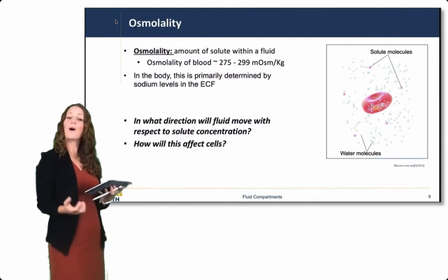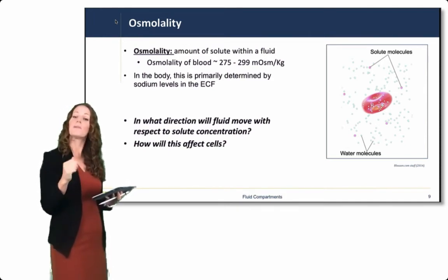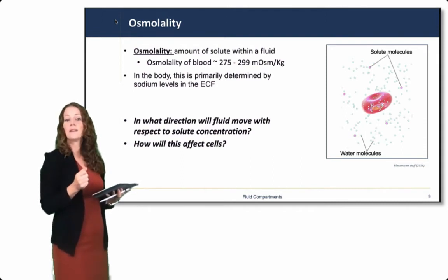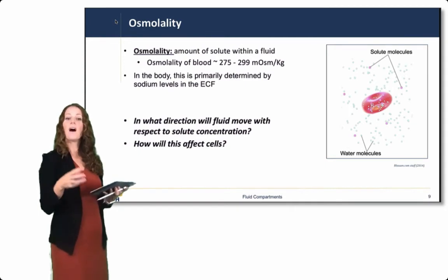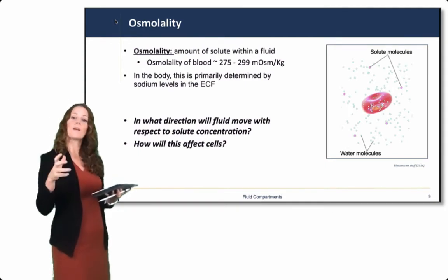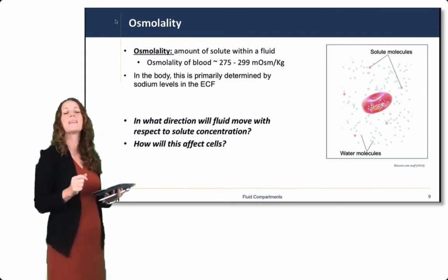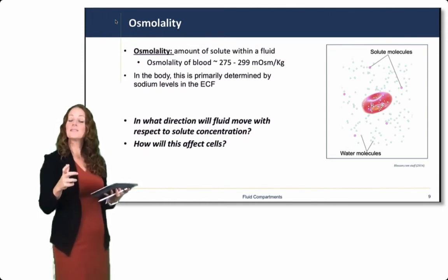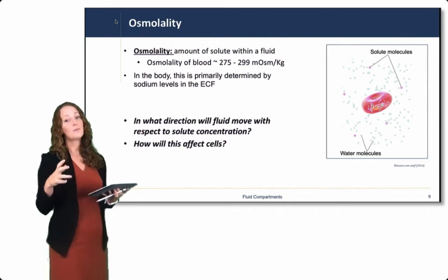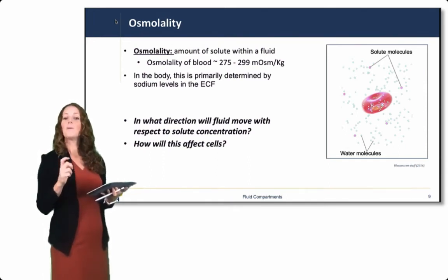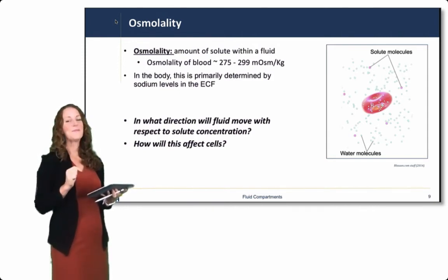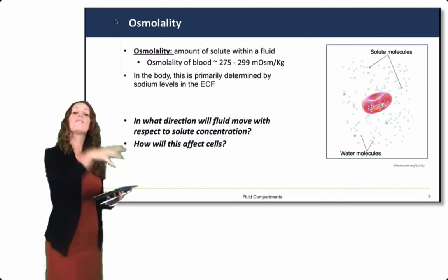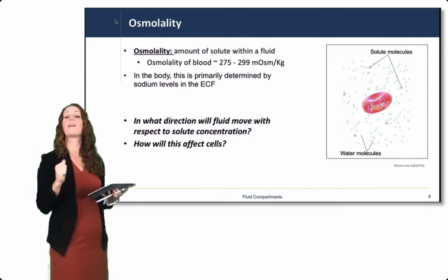Osmolality is the amount of solute within a fluid. We don't distinguish between the type of solute when it comes to osmolality — this could be salt, sugar, or any solute that helps draw fluid into the compartment. The osmolality of blood ranges from 275 to 299, approximately 300 milliosmols — an easy way to remember it. In the body, this is primarily determined by sodium levels in the ECF, assuming albumin levels are constant. Fluid follows salt: when solute concentration increases, fluid will leave other compartments to move toward higher solute concentration.